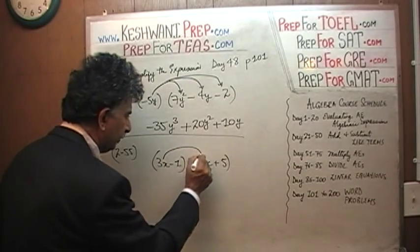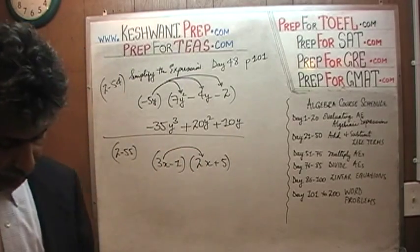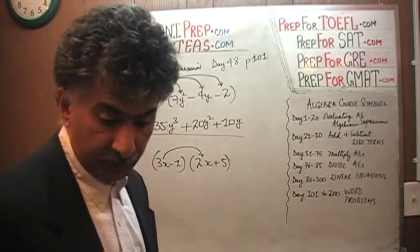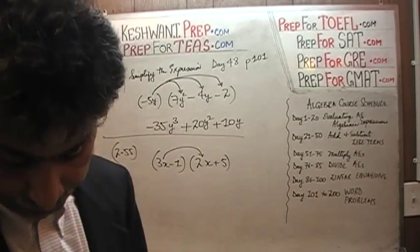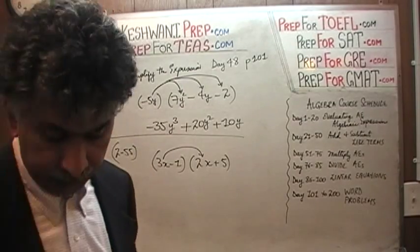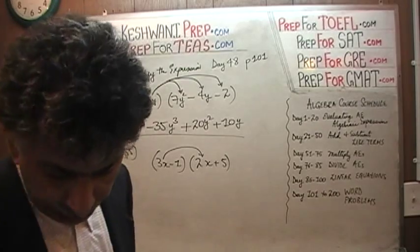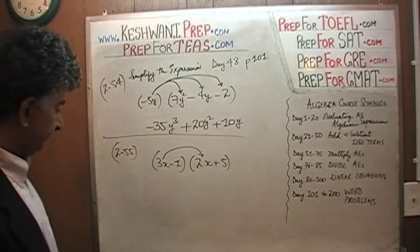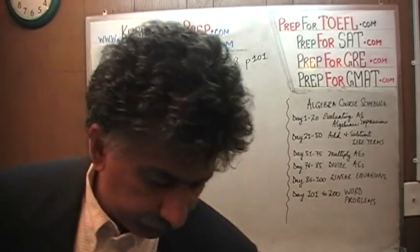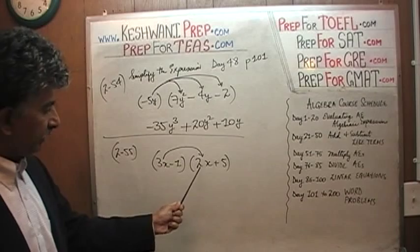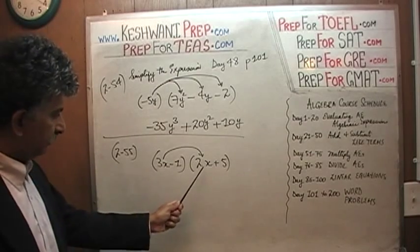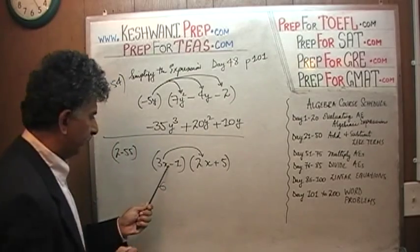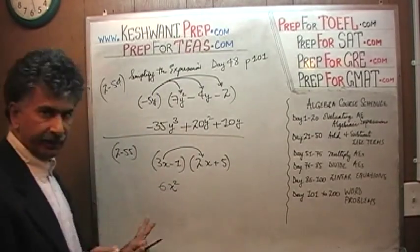So we multiply 3x by 2x. I should pause and remark that in American schools they teach something called FOIL — that's not what we are going to do here. Just follow the procedure: you take the first term of the first expression and multiply it by the entire other expression. So 3x times 2x — 3 times 2 is 6 and x times x is x squared, giving us 6x squared. You are done with that part.